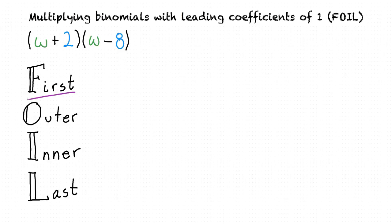The word FIRST tells us to multiply the first term in each of these two binomials. In this case, it's w times w, which gives us w squared.